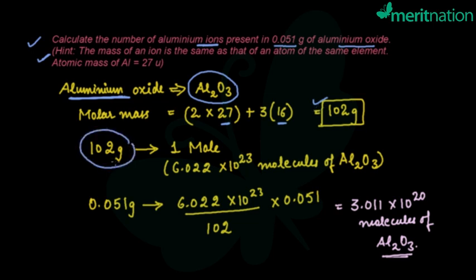Now 102 grams is the molar mass of one mole. If you're talking about molar mass, that means it's the mass of one mole. One mole means that Avogadro's number of molecules are present, that is 6.022 × 10²³.